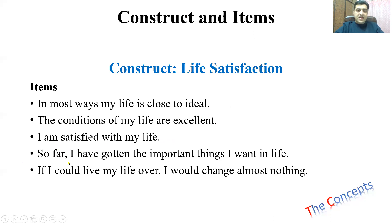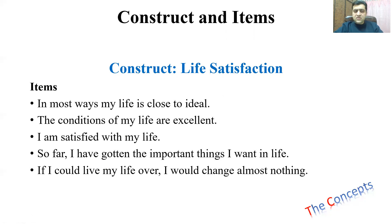Another item can be: 'So far I have gotten the important things I want in life.' Another item: 'If I could live my life over, I would change almost nothing.' So in this example, life satisfaction is a construct being measured by these five items. You can also imagine different constructs like happiness, organizational commitment, job burnout, and brand loyalty — all of these are constructs. But when we try to measure those things with different questions, those questions or statements are known as items.